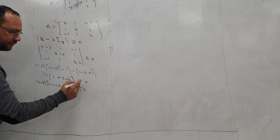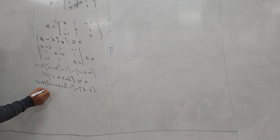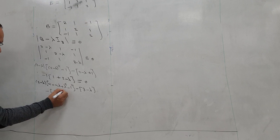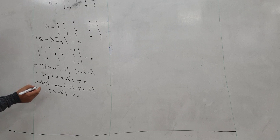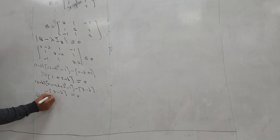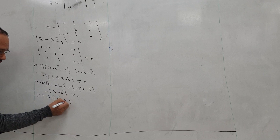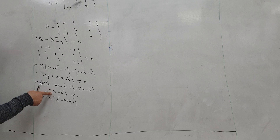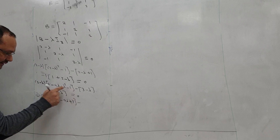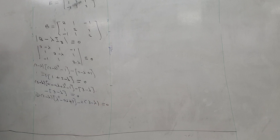To simplify, we expand the bracket: 2 minus lambda multiplied by (lambda squared minus 4 lambda plus 3). We get the term minus (2 minus 1) giving minus 3 minus lambda, and also minus lambda, giving minus 3 minus lambda. This equals 0.